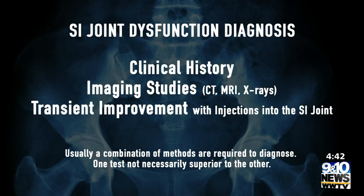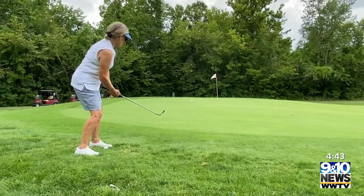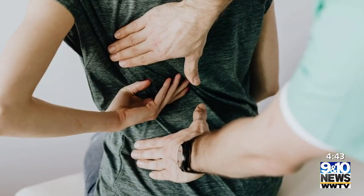What are some ways that you treat this? The first thing is making the diagnosis, which is usually done through a clinical history. Imaging studies such as CTs, MRIs, and x-rays are usually important to demonstrate it. What we look for is a transient improvement with injections into the SI joint — patients will often notice a temporary improvement with steroid injections, but then the pain recurs. Certain exercises and maneuvers that stress the joint and cause pain are also part of the clinical history.